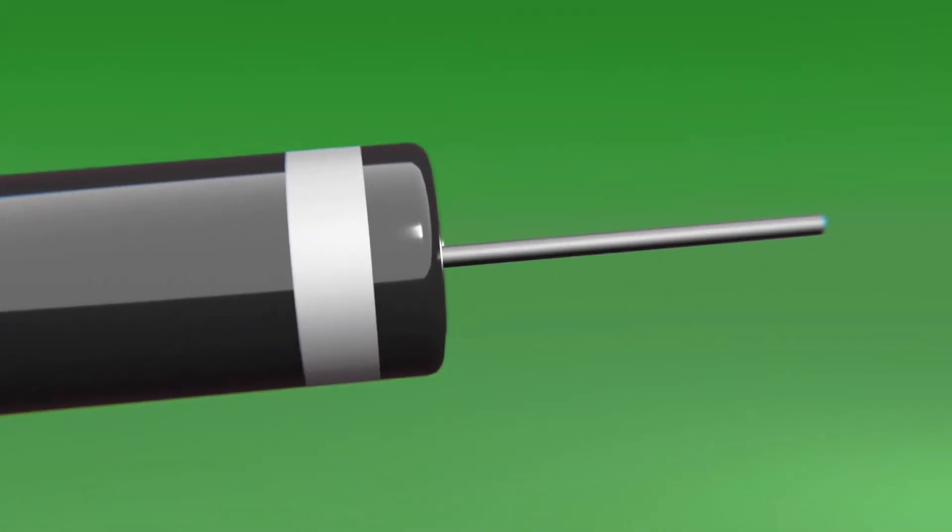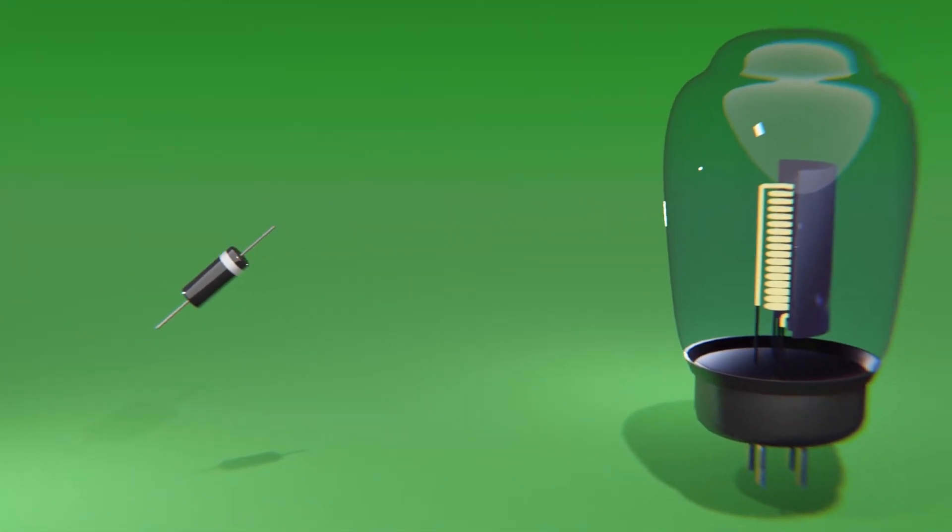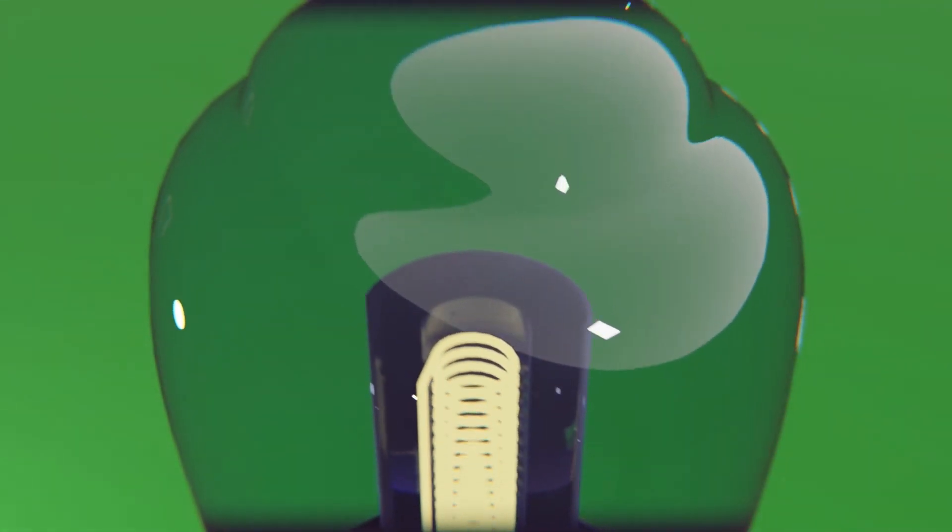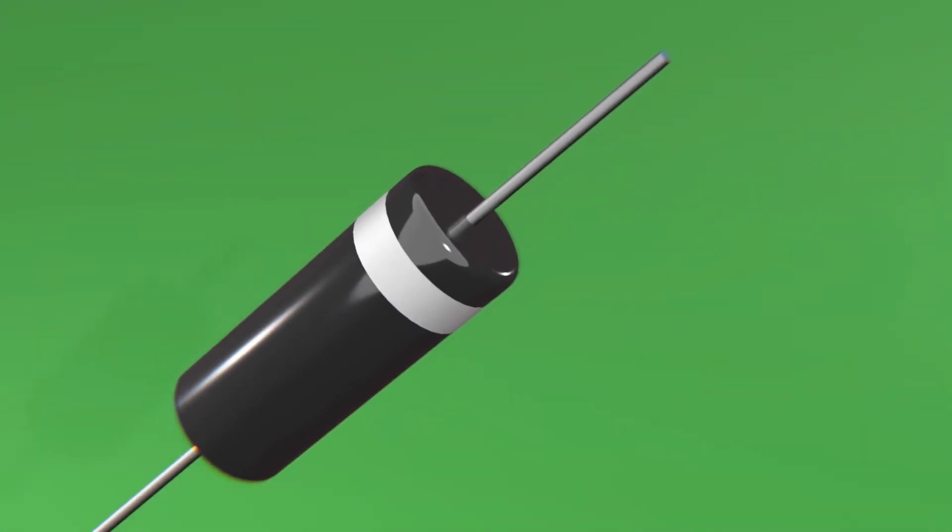There are dozens of types of diodes but in this video we are going to focus on two: the first that was invented, the vacuum diode, and one of the most used today, the semiconductor diode.